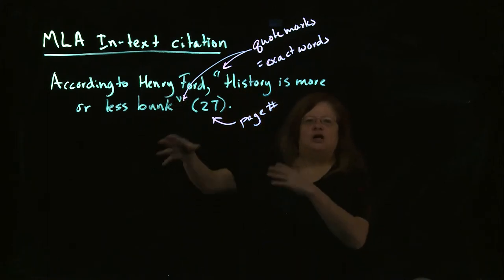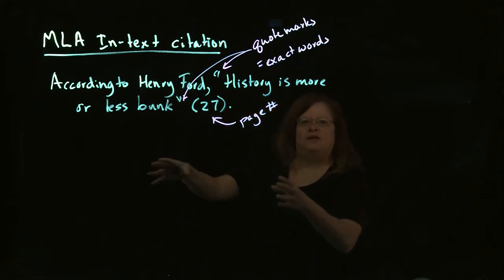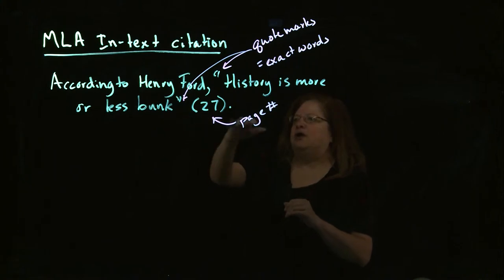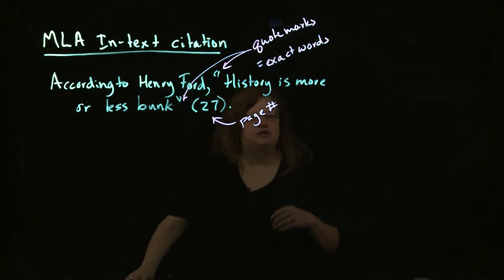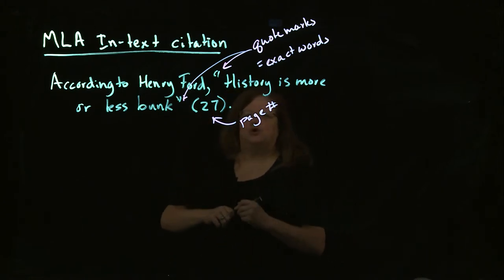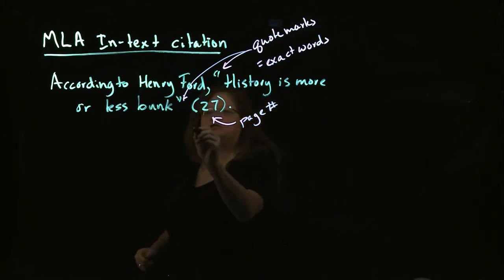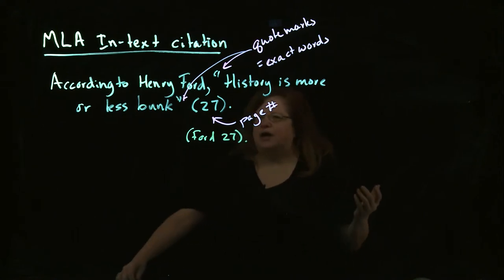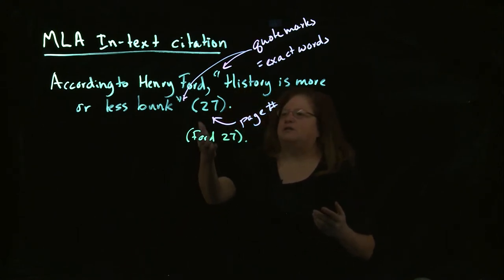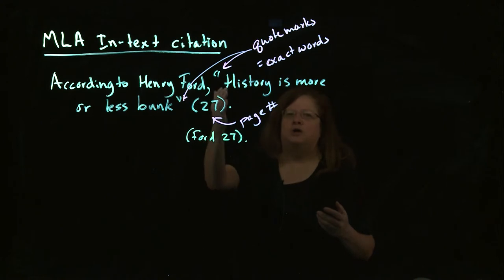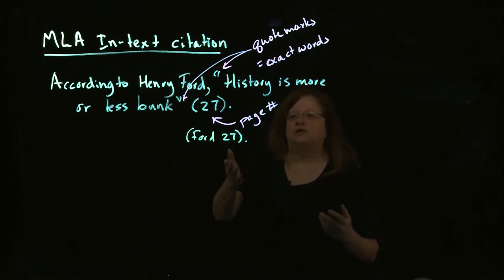Now if you've got a really big complicated sentence where you can't get Henry Ford's name into the sentence and you need to cite the source, you could put his name in the parentheses along with the page number. So I might have Ford 27. And so that would be MLA style. People know when we have a name here in the parentheses, that's the last name of the source, and again the number is a page number.